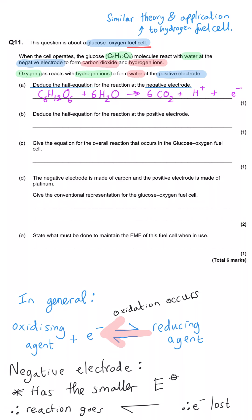Glucose has 12 hydrogen atoms, and six water molecules contribute another 12 hydrogen, giving 24 hydrogen on the left-hand side, so we need 24 hydrogen ions on the right-hand side. The equation is nearly finished — we just need to balance the electrons. The left-hand side has no charge; the right-hand side has a charge of +24. We therefore need 24 electrons on the right-hand side to give zero charge overall. And we need to do all of that for one mark.